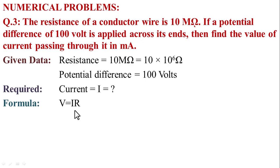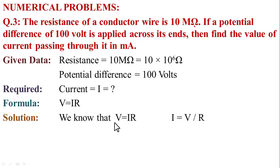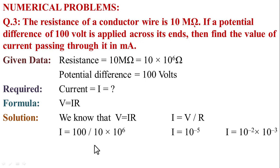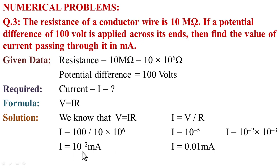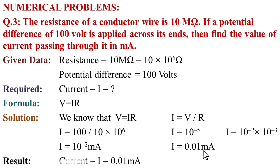According to the given statement, write the given data: resistance R is equal to 10 mega ohm. Here, 1 mega is equal to 10 raised to the power 6. So resistance R is equal to 10 multiplied by 10 raised to the power 6 ohm. Potential difference V is equal to 100 volt. We require current I. Using Ohm's law: V is equal to IR, rearranging gives I is equal to V upon R. Putting the values: I is equal to 100 divided by 10 multiplied by 10 raised to the power 6. This gives I is equal to 10 raised to the power minus 5 ampere. Converting to milli: I is equal to 10 raised to the power minus 2 milliampere, which equals 0.01 milliampere. The result: current I is equal to 0.01 milliampere.